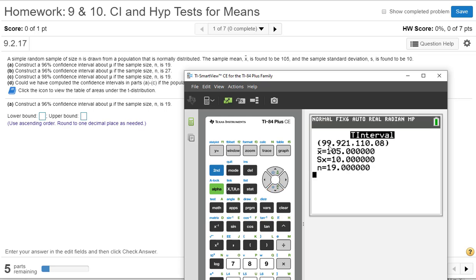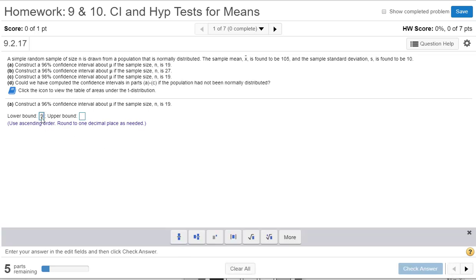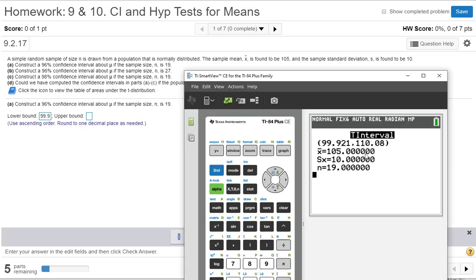There's our interval. So the lower bound, and we're going to round to one decimal place, is 99.9, and the upper bound is 110.1.